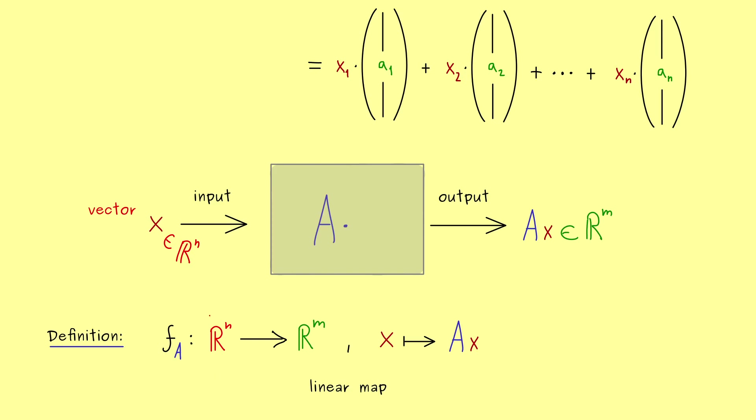In fact, later we will show that this is indeed a linear map. And the general concept of a linear map, we will define soon. However, here it is already good to see that the matrix, as a table of numbers, can be lifted to an abstract mathematical object.